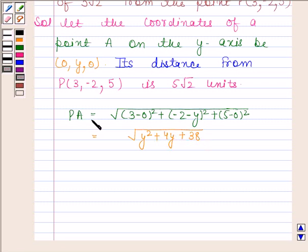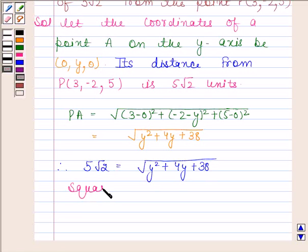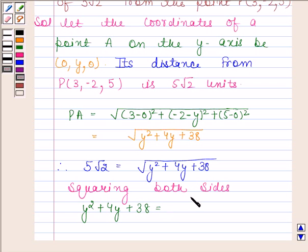Now we are given that distance between P and A is 5√2 units. Therefore 5√2 is equal to square root of y² + 4y + 38. Squaring both sides, y² + 4y + 38 is equal to 50.